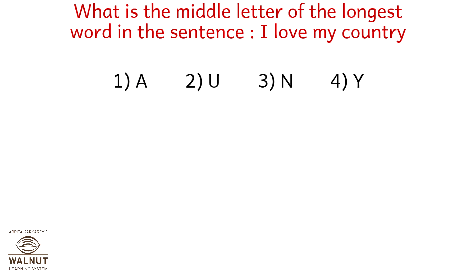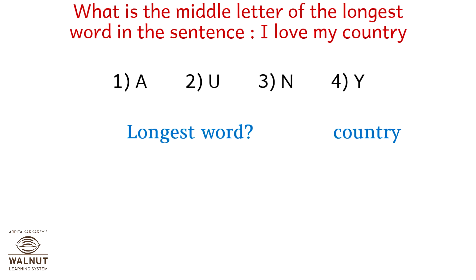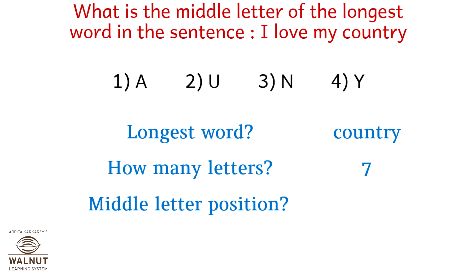What is the middle letter of the longest word in the sentence 'I love my country'? Options: one is A, two is U, three is N, four is Y. The longest word is 'country', which has seven letters. The middle letter position is 7 plus 1 upon 2, which is the fourth position — N. So the correct answer is option three, N.